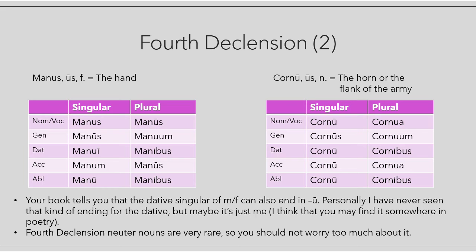We also have neuter nouns, but you don't find them very often. I decided to decline 'cornu' because it is a fairly frequent noun — you usually find it in military contexts, so you are likely to encounter it. 'Cornu, cornus' means the horn or one of the two flanks of the army. Singular: cornu, cornus, cornu, cornu, cornu. Plural: cornua, cornum, cornibus, cornua, cornibus.